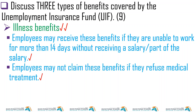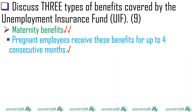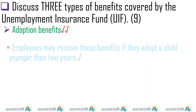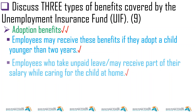Illness benefits: employees may receive these benefits if they are unable to work for more than fourteen days without receiving a salary or part of a salary. Employees may not claim these benefits if they refuse medical treatment. The next one is maternity — pregnant employees receive these benefits for up to four consecutive months. If an employee has a miscarriage, she can claim for up to six weeks or 42 days.